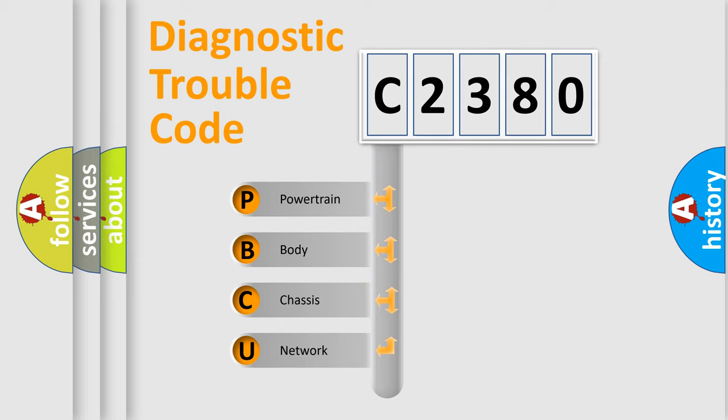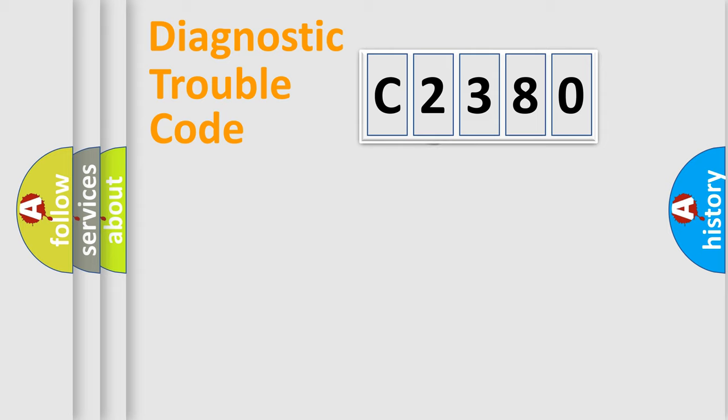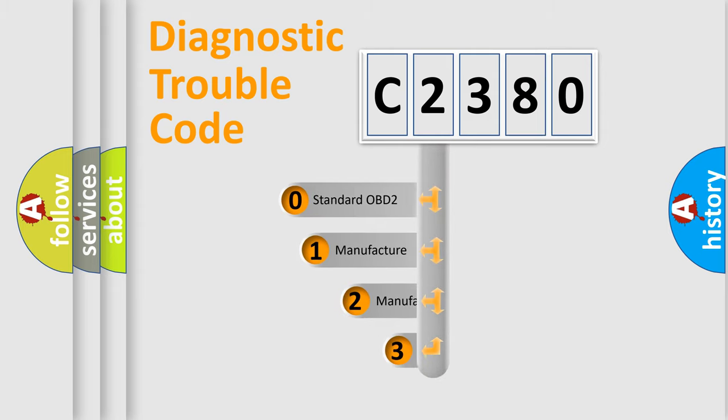We divide the electric system of an automobile into four basic units: Powertrain, Body, Chassis, and Network. This distribution is defined in the first character code.